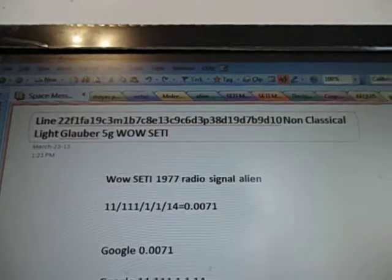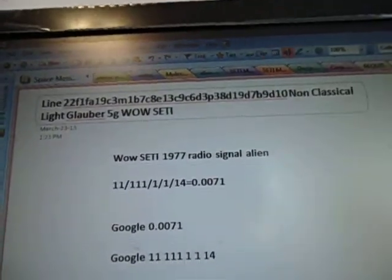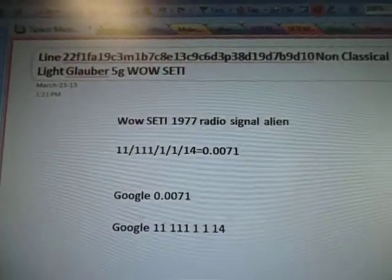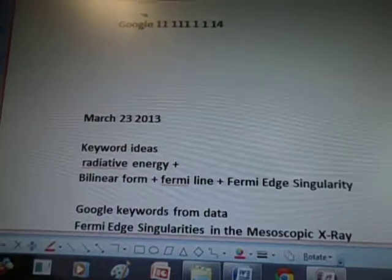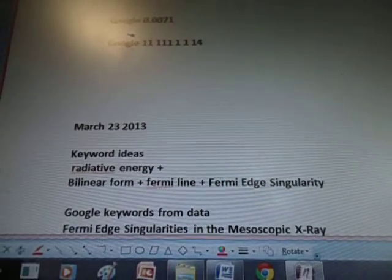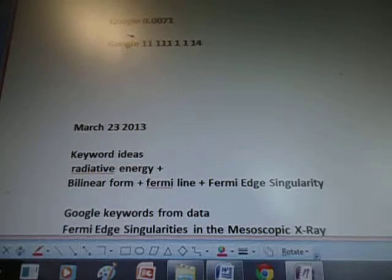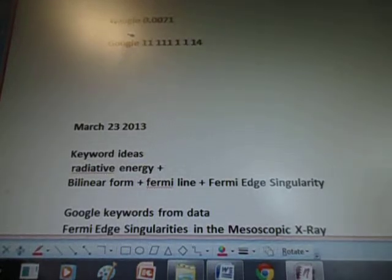Non-Classical Light, Glauber-Sudarshan P Representation. This is about the alien radio signal, the Wow SETI data. This is Non-Classical Light Quantum Optics, Glauber-Sudarshan P Representation, keyword research for the long distance signals in the Wow data.